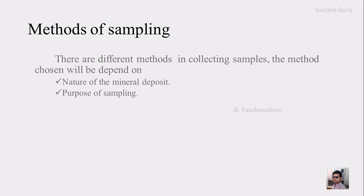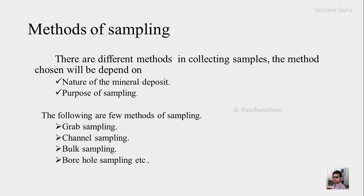Now we know what a sample is, why to sample, and how to sample. There are a few methods involved in sampling. The method used depends on two things: first, the nature of the mineral deposit — whether it is scattered, intrusive, or bedded; and second, the purpose of sampling — for reconnaissance work a random sample is sufficient, while for detailed work detailed sampling is required. The following are the types or methods of sampling: grab sample, channel sample, bulk sample, and borehole sample.